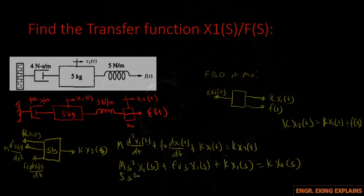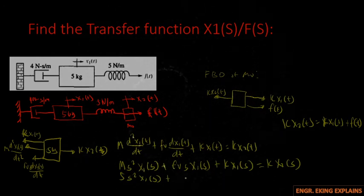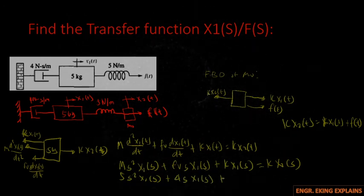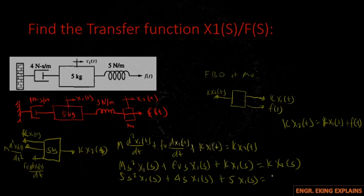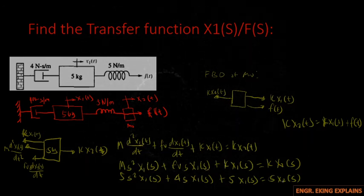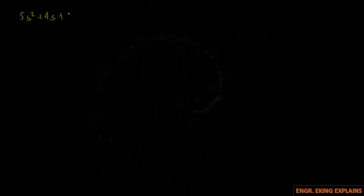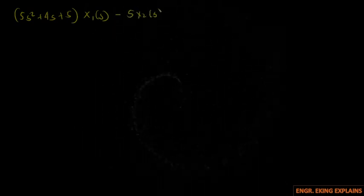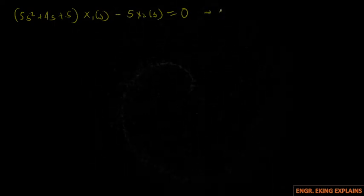Substituting the values: for our mass m = 5, this becomes 5s² · x1(s). For our damper FV = 4, this is 4s · x1(s). For our spring K = 5, that will be 5 · x1(s) = 5 · x2(s). Factoring out x1(s) gives: (5s² + 4s + 5) · x1(s) − 5 · x2(s) = 0. This is Equation 1.